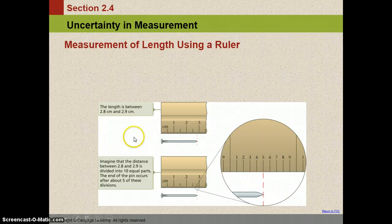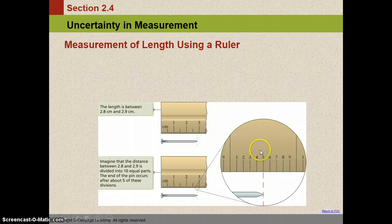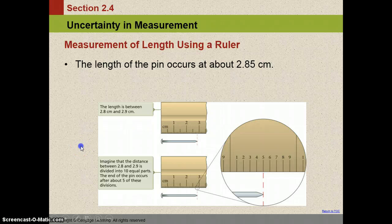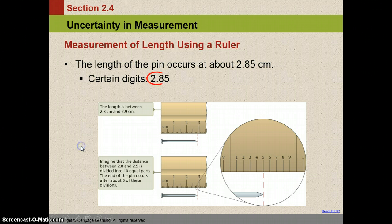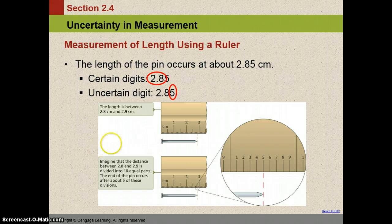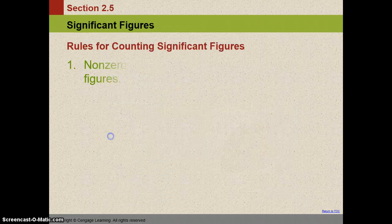Now not everybody would see it like that either. So I may look at it and say it's 2.87 because my imaginary 10 marks are a little bit different than what these are. So the length of the pen is about 2.85. The certain digits out of those are going to be the 2 and the 8 because we know that it's definitely past the 8 but not quite to the 9. The uncertain digit then is the 5. And we always estimate the last digit when we measure anything.